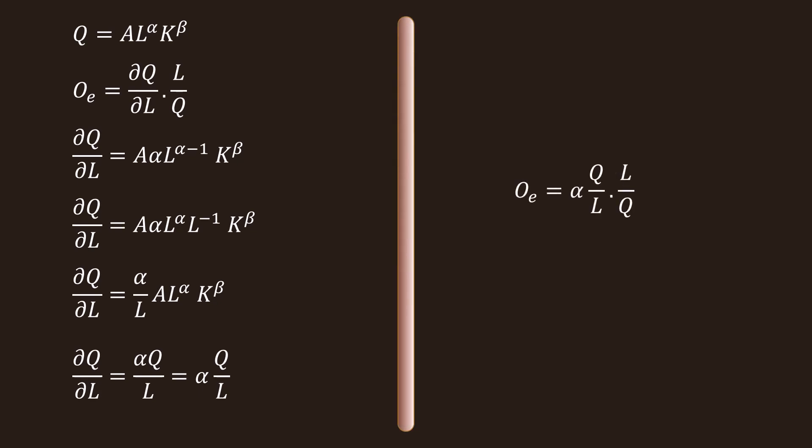Substitute the value of dQ/dL in the elasticity formula. QE equal to (alpha Q / L) multiplied by (L / Q). Q and Q cancel, and L and L cancel. The value of elasticity is alpha — which is the exponent of the variable labor L.